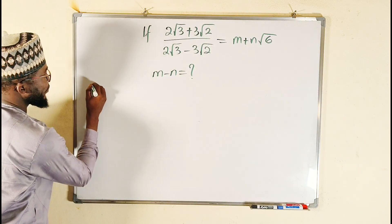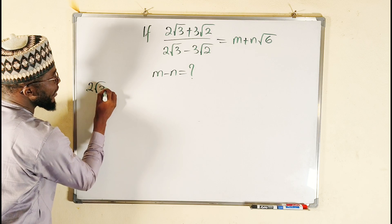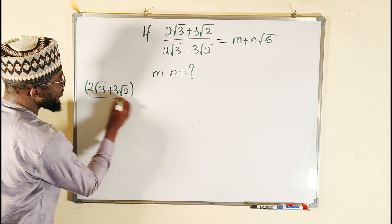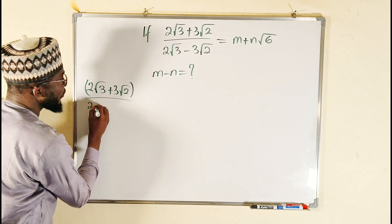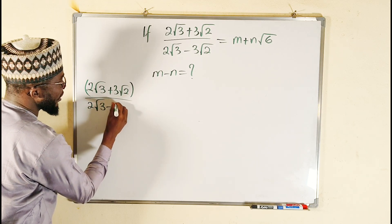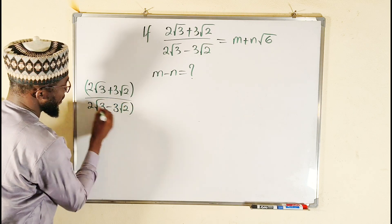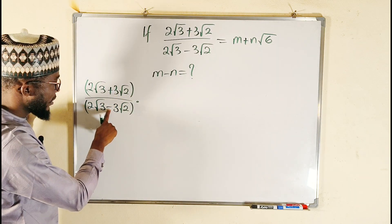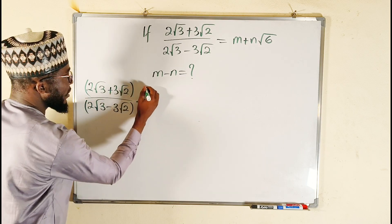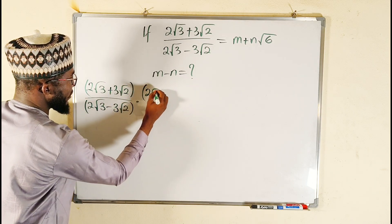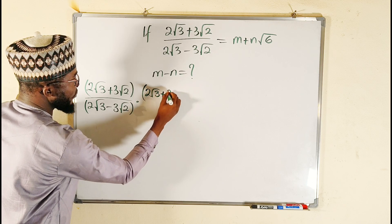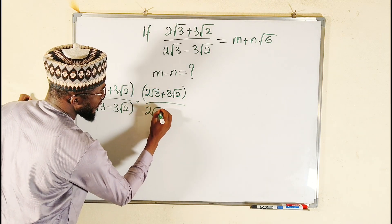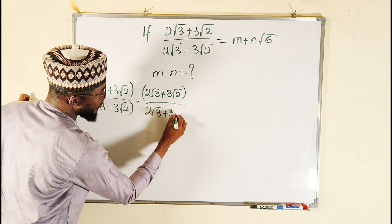So we have 2√3 + 3√2 divided by 2√3 - 3√2. The conjugate will be a difference of sign — it is going to be plus. So we multiply by 2√3 + 3√2 over 2√3 + 3√2.